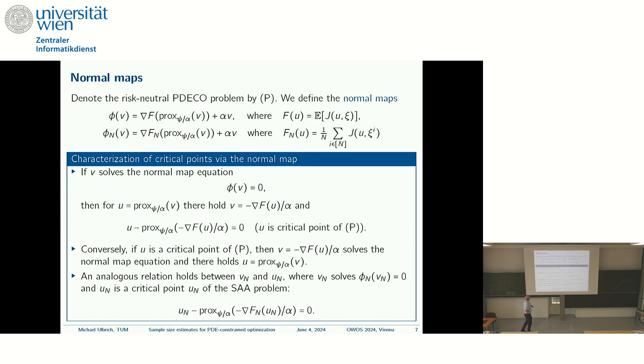But, for the moment, only for this gradient, we would like to have compactness in this control space. So, we have some, somehow, to translate it to U. And for this, we use the normal map, which was introduced by Steve Robinson. And I recap some properties of the normal map. For our problem, if we introduce the state-dependent part of the cost function as capital F and the sample average approximation by Fn, then, for our problem, the normal map looks like this. So, this for the original problem, this for the SAA.